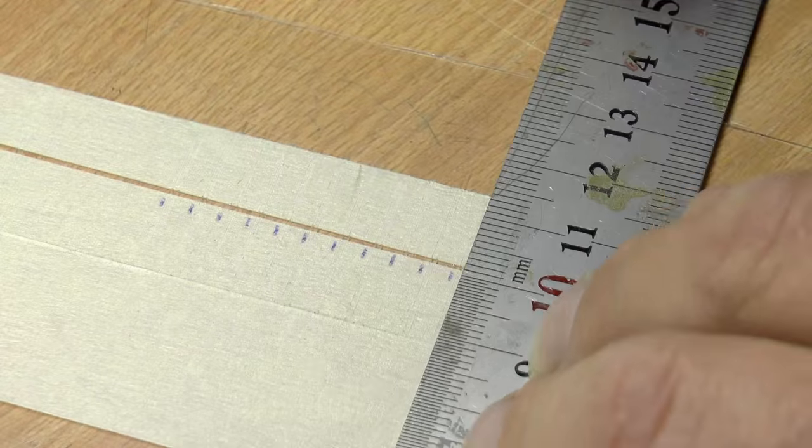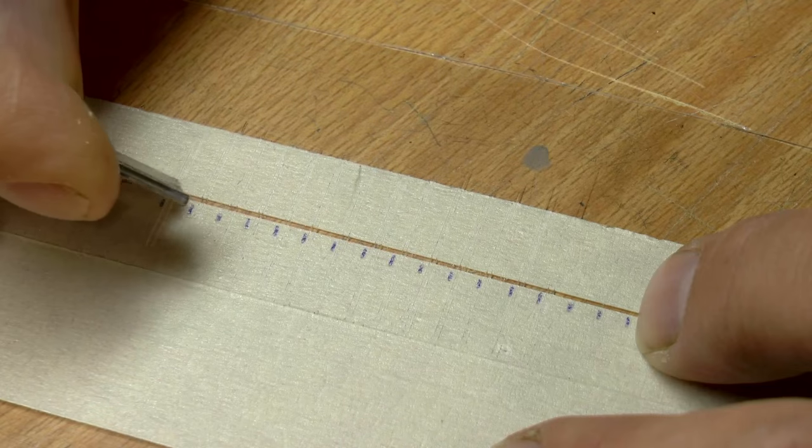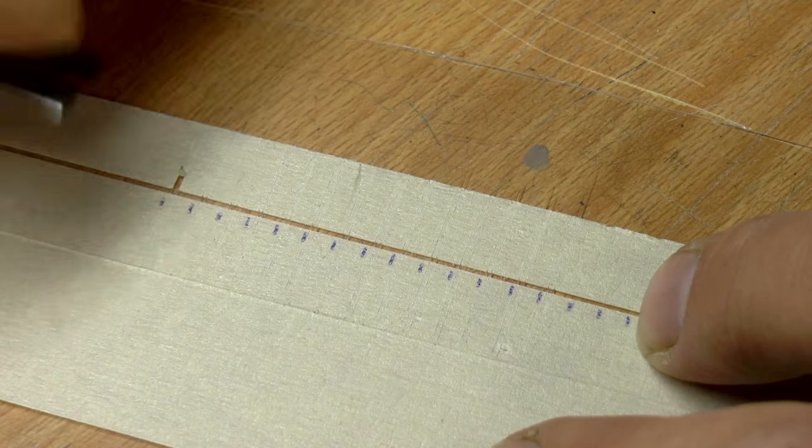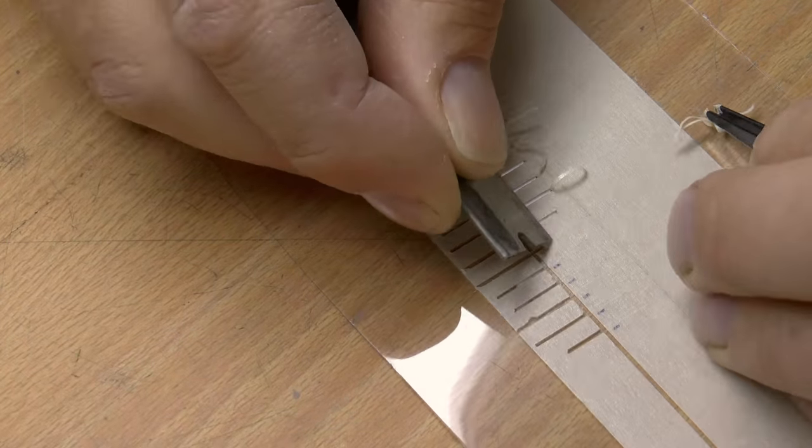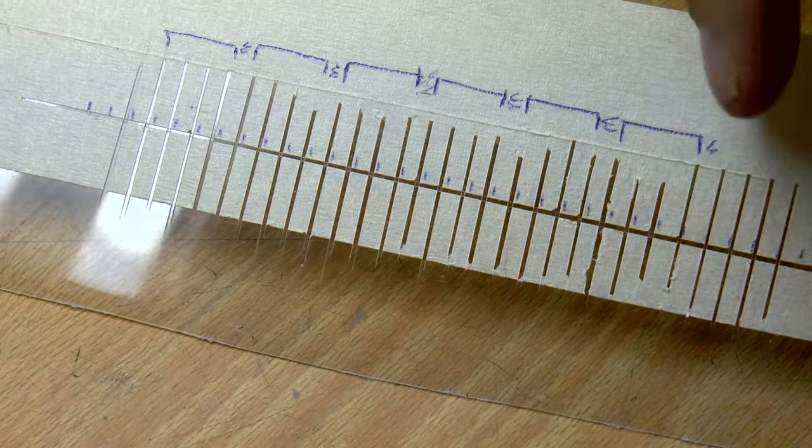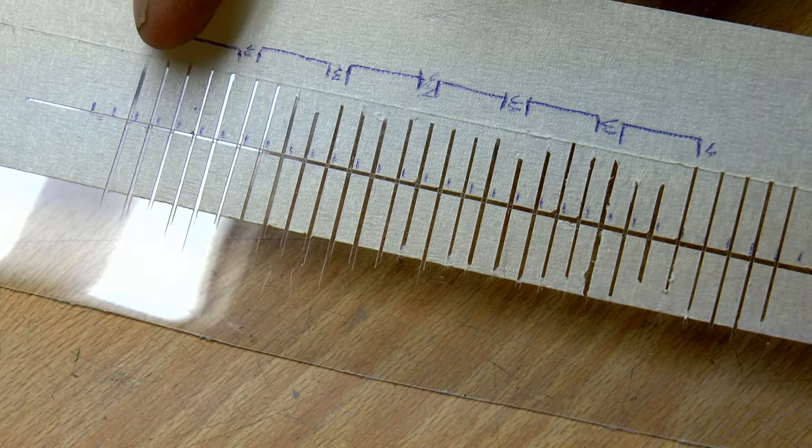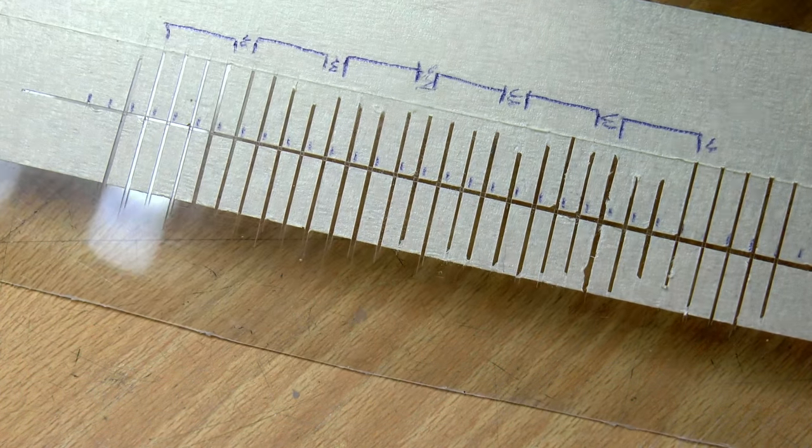I found it convenient to lift the edge with the razor blade and peel it off with a tweezer. Once all of the tapes are removed it looks like this and we're ready to paint.